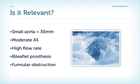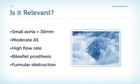When can pressure recovery be relevant? Especially in patients with a small ascending aorta below 30 mm. In these patients, we have to consider pressure recovery. If we have a patient with moderate aortic stenosis, we also have to think of pressure recovery — because if we incorrectly classify this patient into the severe category, this is important for prognosis and outcome. We also have to consider pressure recovery when there is an underlying high flow rate, such as in hyperdynamic LV function, aortic regurgitation, thyroid disease, or tachycardia. Sometimes we can also encounter this in bileaflet prostheses or in patients with very funnel-shaped obstruction.